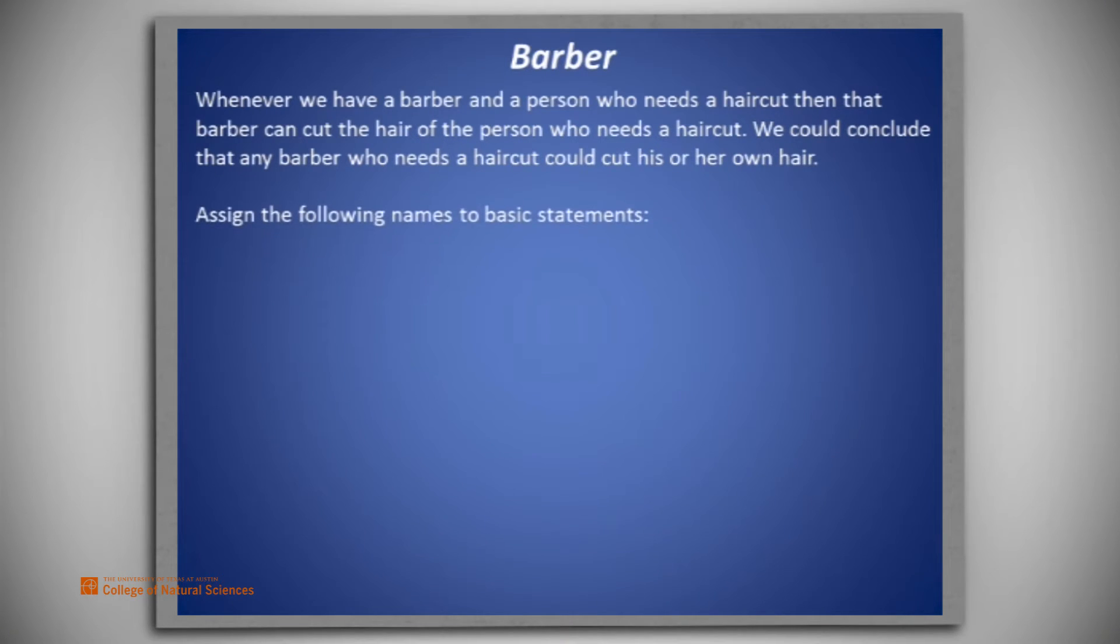Let's begin by defining these predicates. B of X means X is a barber. H of X means X needs a haircut. And C of X and Y means X can cut the hair of Y.